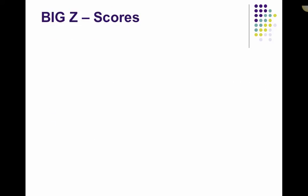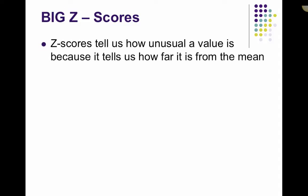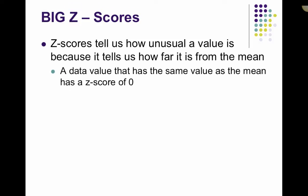Alright, let's talk about how big z-scores can get. A z-score tells us how unusual a value is because it tells us how far it is from the mean. So the further away you are from your mean, the further you are from the center, the more unusual you are going to be. So a data value that has the same value as the mean has a z-score of zero. It's not any different. That's actually normally kind of boring.